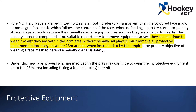All players must remove all protective equipment before they leave the 23 metre area or when instructed to by the umpire. The primary objective of wearing a face mask to defend a penalty corner is safety. Under this new rule, players who are involved in the play may continue to wear their protective equipment up to the 23 metre line, including taking a non-self-pass free hit. As umpires, we need to remember the reason why face masks and other protective equipment such as knee pads and extra gloves are worn — and that is to protect players during a high-risk play.